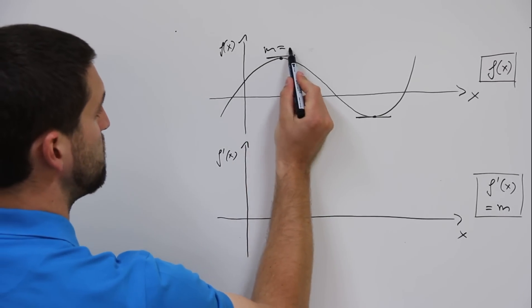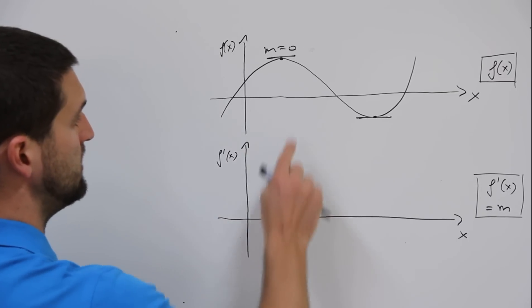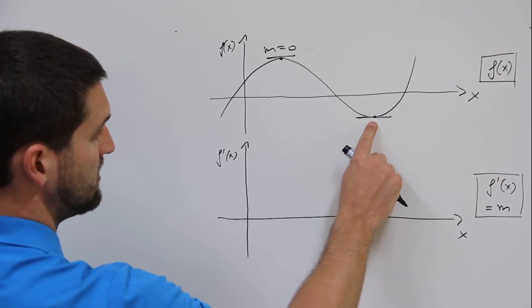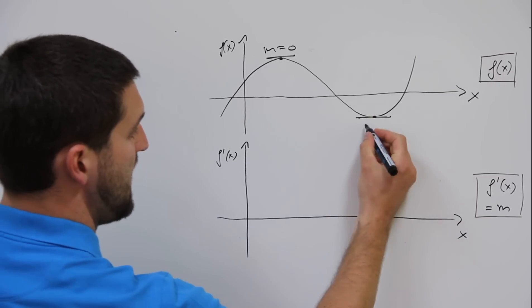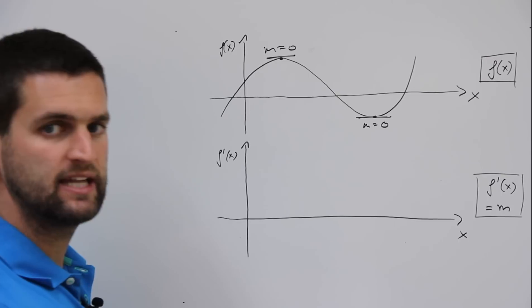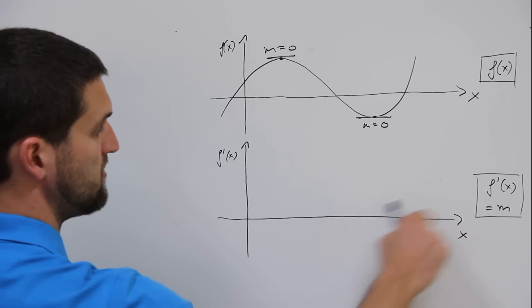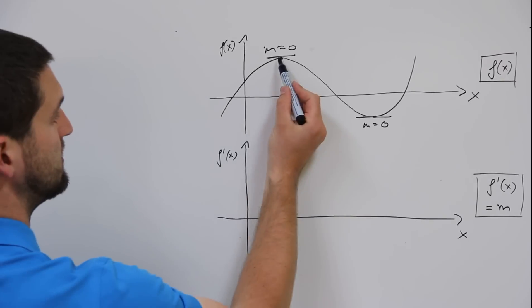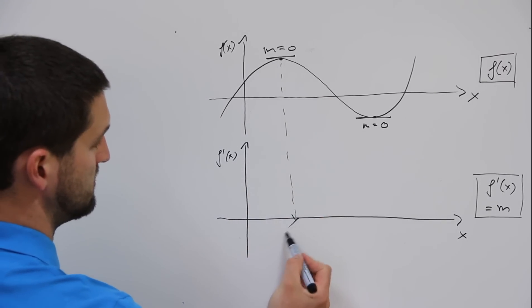M equals zero. Down to the valley, you're standing, down to the valley, m equals zero again. What does it mean for the derivative of f of x? Zero.